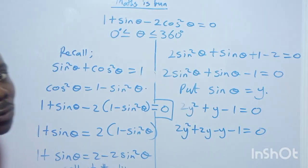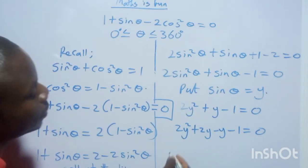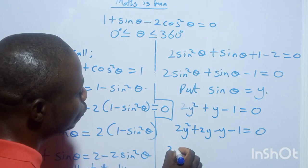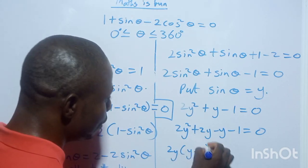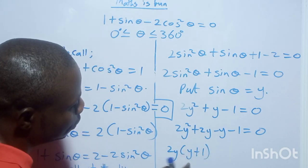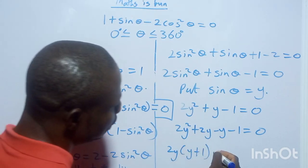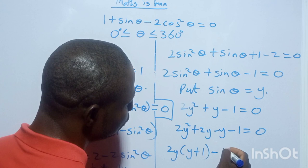We need +2y and −y. So we rewrite it as 2y² + 2y − y − 1 = 0. Factorizing: 2y(y + 1) − 1(y + 1) = 0.